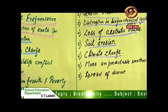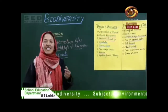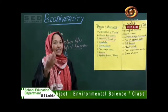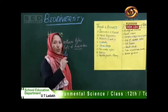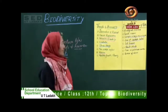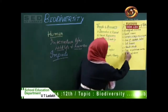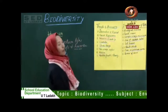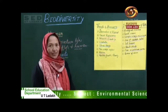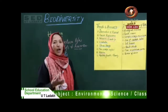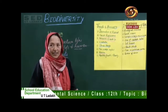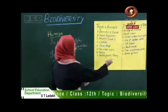The sixth impact is climate change. When there is change in climate because of biodiversity loss, it leads to changes in rainfall and temperature patterns of a particular region. The seventh impact is unpredictable weather. The last one is the spread of diseases.